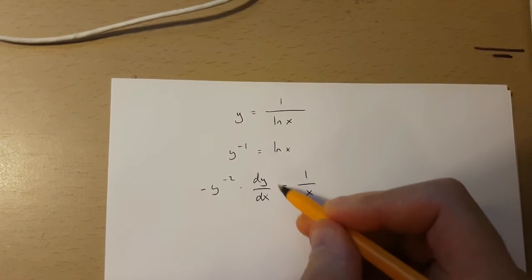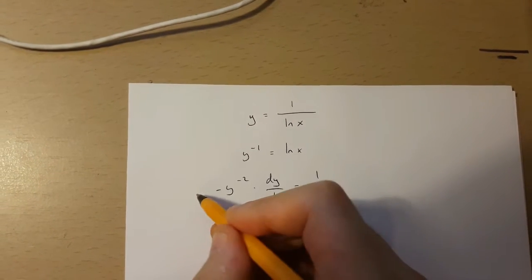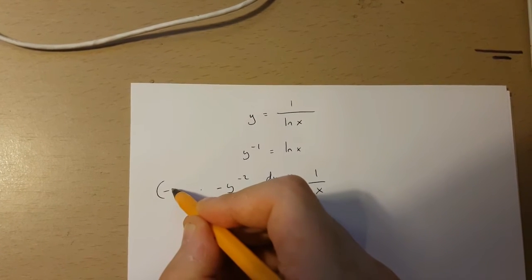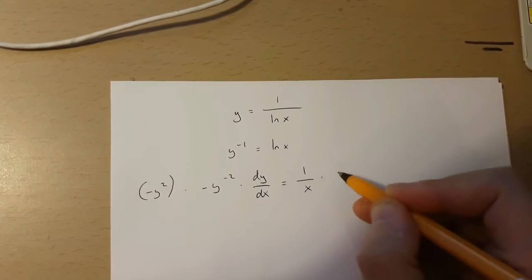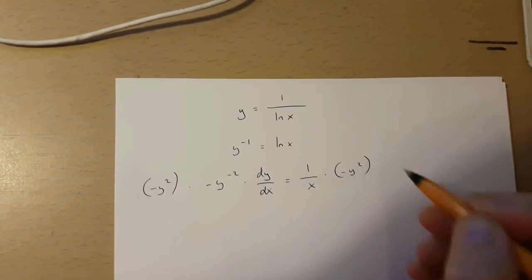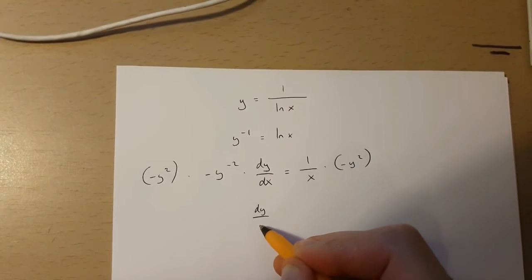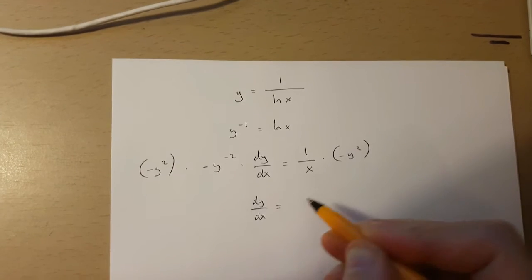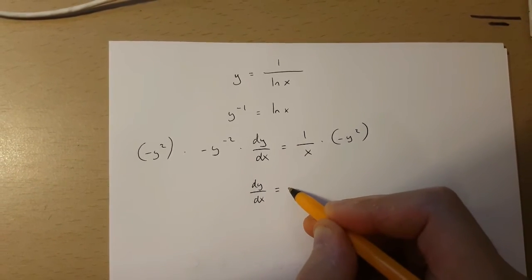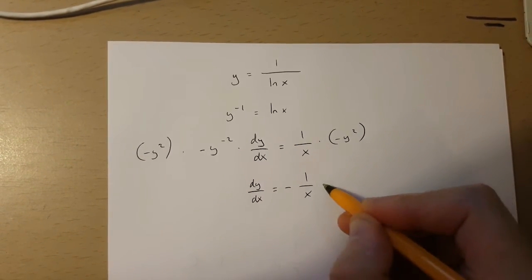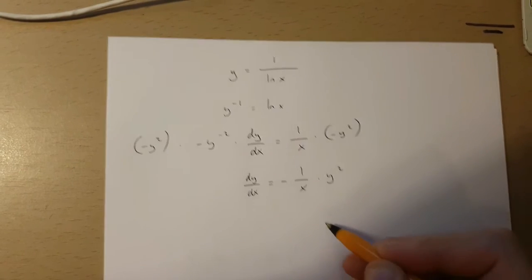To isolate dy over dx, I have to multiply both sides of this equation by minus y squared. So I end up with dy over dx equals minus 1 over x times y squared.